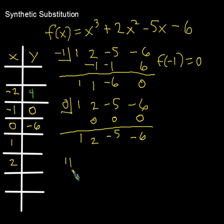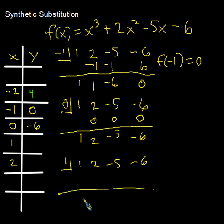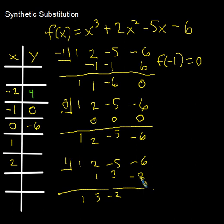Let's try x equals 1 with coefficients 1, 2, negative 5, negative 6: 1 plus nothing is 1; 1 times 1 is 1; 2 plus 1 is 3; 1 times 3 is 3; negative 5 plus 3 is negative 2; 1 times negative 2 is negative 2; negative 6 plus negative 2 is negative 8. Remember, we're always adding from top to bottom — we never subtract.